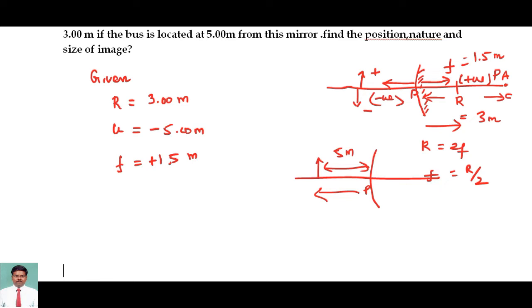My aim is to calculate the position of the image. That can be calculated from the formula 1 by f equals 1 by u plus 1 by v. So I want to calculate 1 by v. 1 by v is equal to...